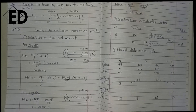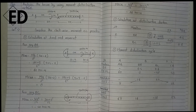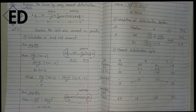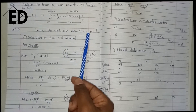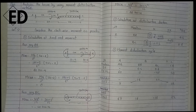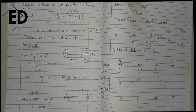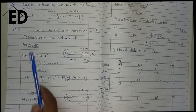For calculating this, the very first step is the declaration of the sign convention. Here we take all the clockwise moment as positive.